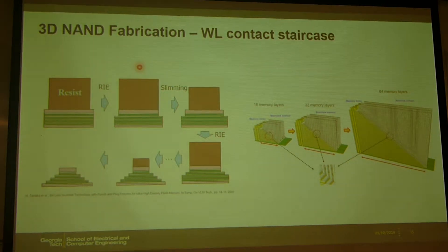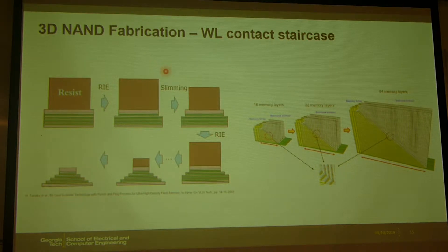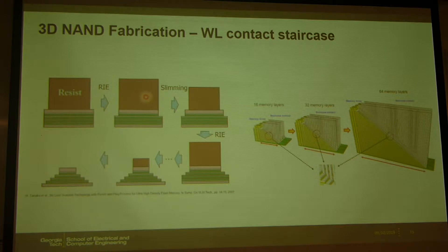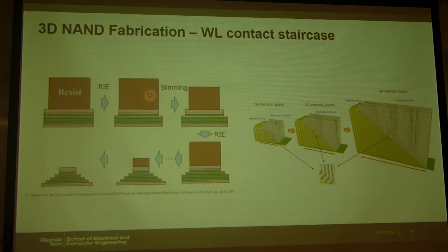How to make the worldline stairs at the row decoder side. We can make each layer by photoresist, photo and etch, photo and etch, repeating that. But the problem is that costs too much and takes too long. So in terms of cost, that is not a good way.